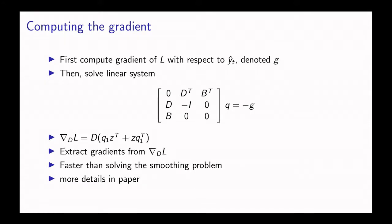In this slide I'm going to describe how we compute the gradient of the prediction error with respect to the parameters. We use the chain rule. First we compute the gradient of L with respect to the predicted output y hat, we denote that by g. Then we solve the following linear system to get q.